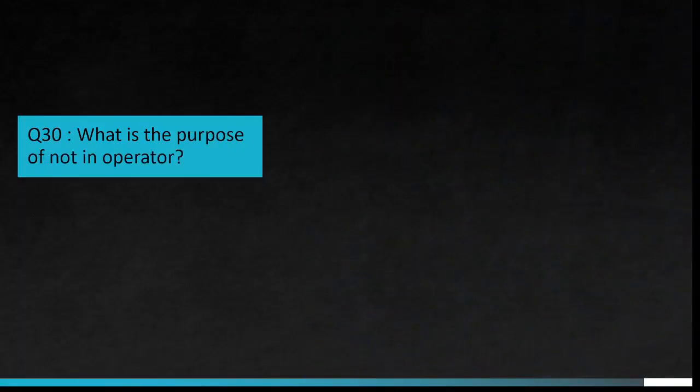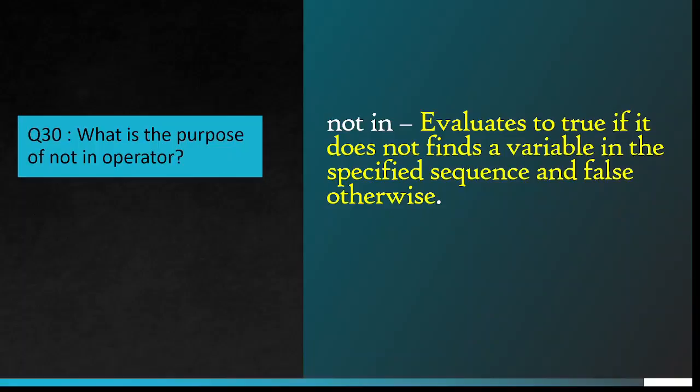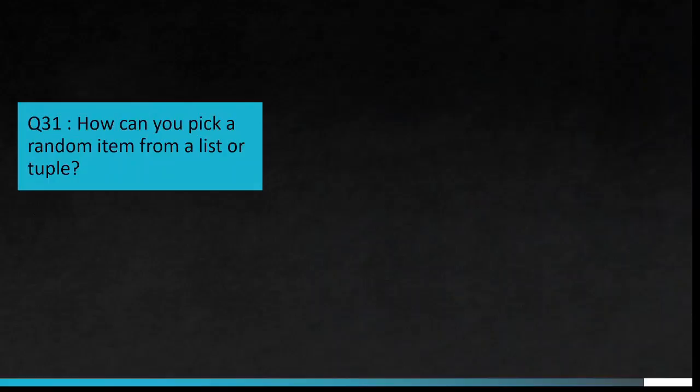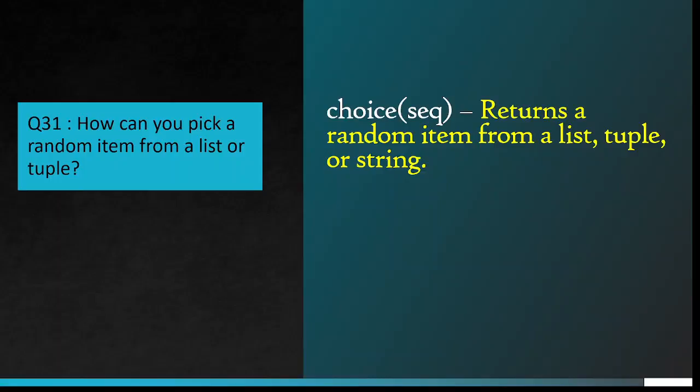Question number 30: What is the purpose of not in operator? Not in evaluates to true if it does not find a variable in the specified sequence and false otherwise. Question number 31: How can you pick a random item from a list or tuple? choice(seq) returns a random item from a list, tuple, or string.